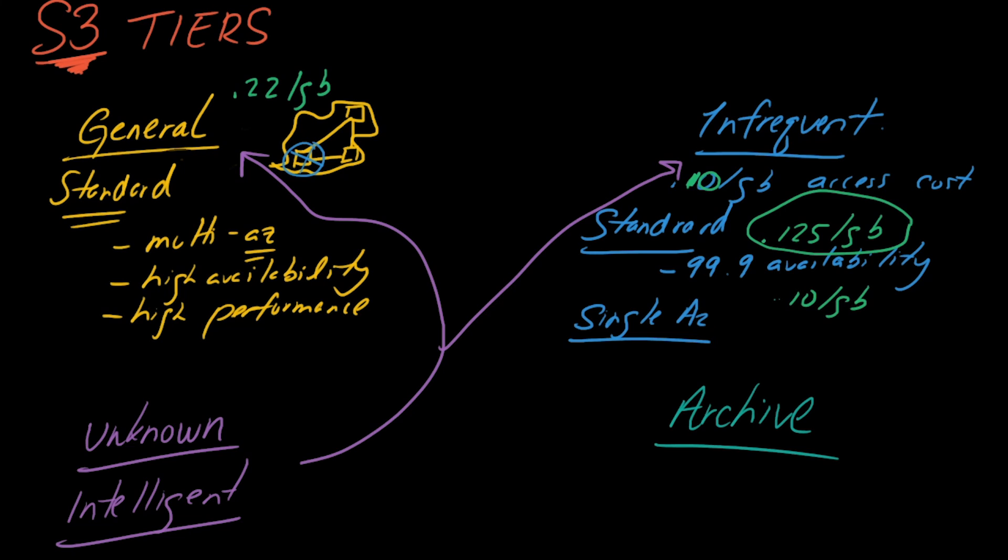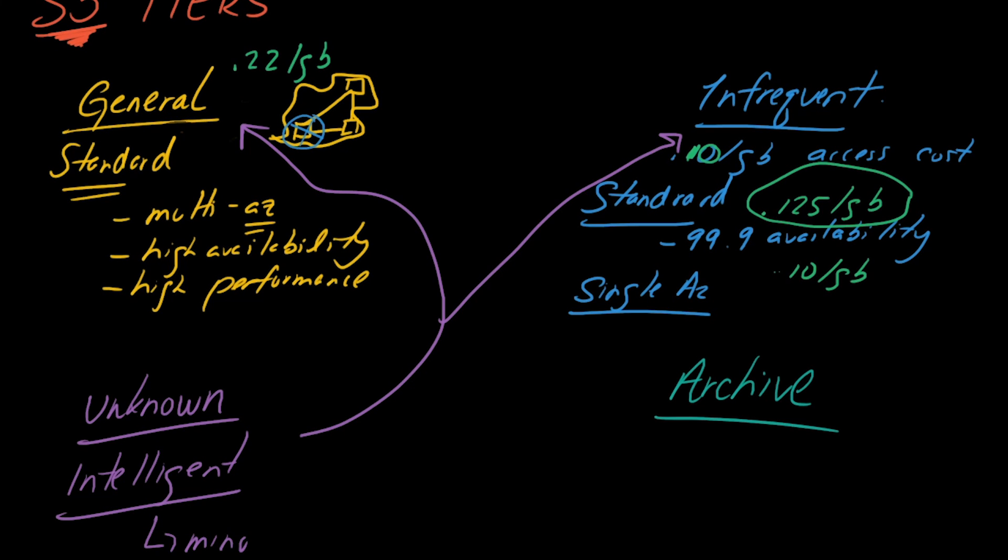Now with intelligent your cost is the same cost for general. So the time that your data spends in general form or in the general partition you pay 22 cents per GB. And then the time where it's partitioned to infrequent you pay the 10 per GB for access and then this for whatever it's using here standard or single AZ. So that's something to keep in mind. Also to keep in mind there's a minor monitoring cost. And so this is so S3 can figure out whether to put your data in the general category or put it in the infrequent category.